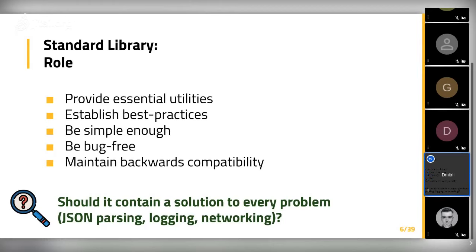An open question is whether the standard library should contain a solution to every problem, like JSON parsing, logging, or networking. In some languages, standard libraries are big and include different utilities — for example, Java's standard library has graphical desktop application utilities, C++ has regular expressions and containers, and in Haskell we have concurrent channels and arbitrary precision integer arithmetic. Each language defines what it wants to include, but at least you should provide some essential and basic things.